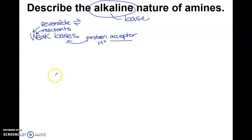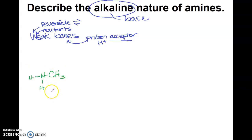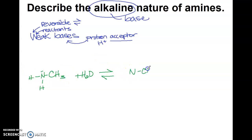For example, let's take our simplest amine: methyl amine. It's an amine because it's an organic derivative of ammonia — it has a carbon group, making it organic, as opposed to ammonia which is inorganic. It has a lone pair, and if you put it in water (H₂O), it will act as a proton acceptor in a weak, reactants-favored reaction, making the methyl ammonium ion and hydroxide.